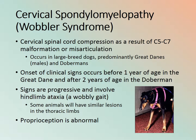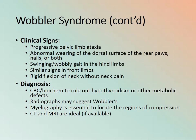Signs are progressive and involve hind limb ataxia and abnormal proprioception — when you curl the toes under, the animal should flip the foot back to normal, but this will be delayed or completely absent. Clinical signs of Wobbler's syndrome include progressive pelvic limb ataxia, abnormal wearing of the dorsal surface of the rear paw, a swinging wobbly gait, similar signs in the front limb, and rigid neck flexion without neck pain.